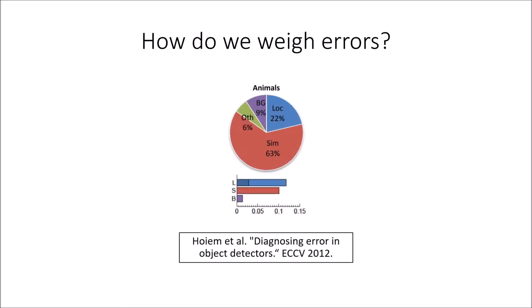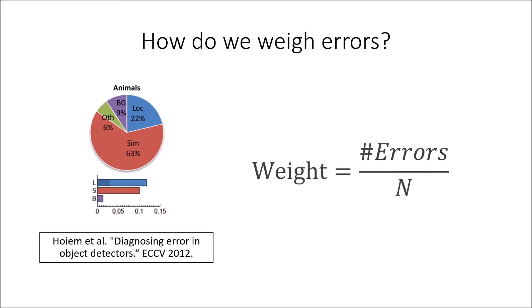Hoiem et al. weights errors by their prevalence in the top-end scoring erroneous detections. While this method is very intuitive, it doesn't describe an error type's contribution to overall MAP, it ignores lower scoring detections, and it only works for false positives.